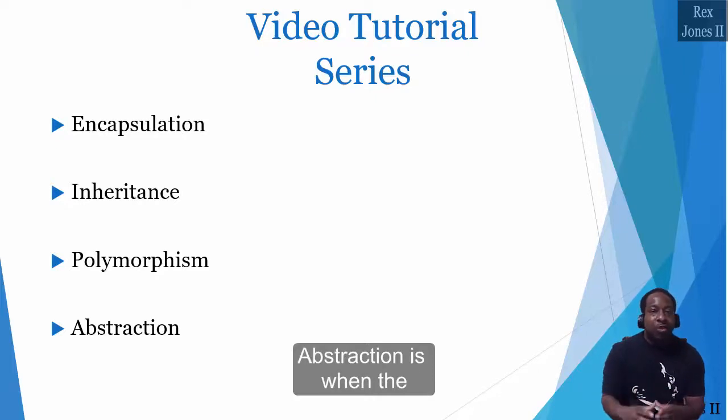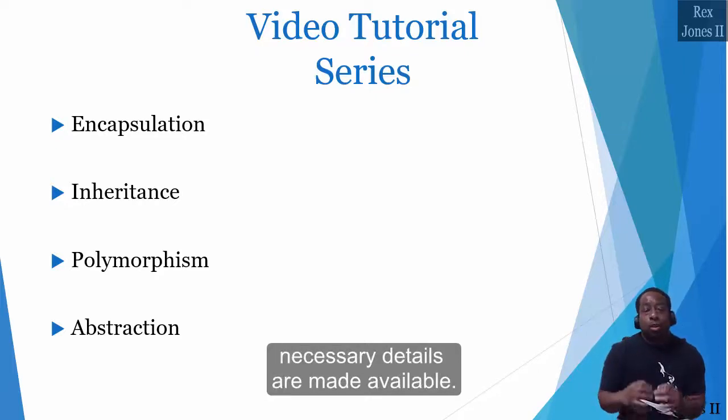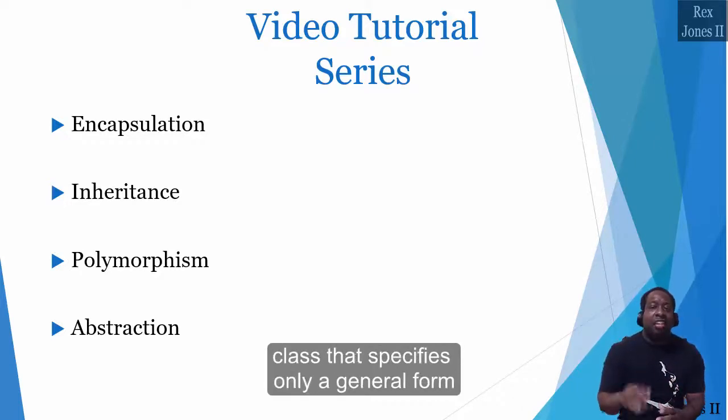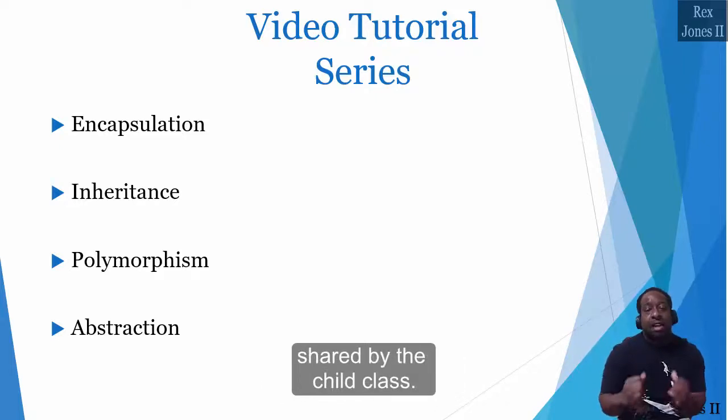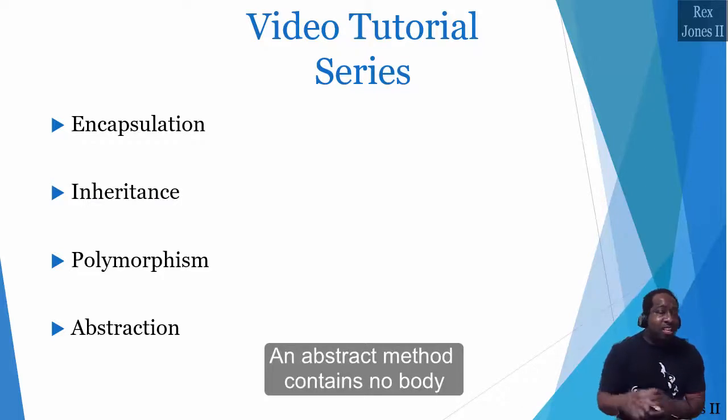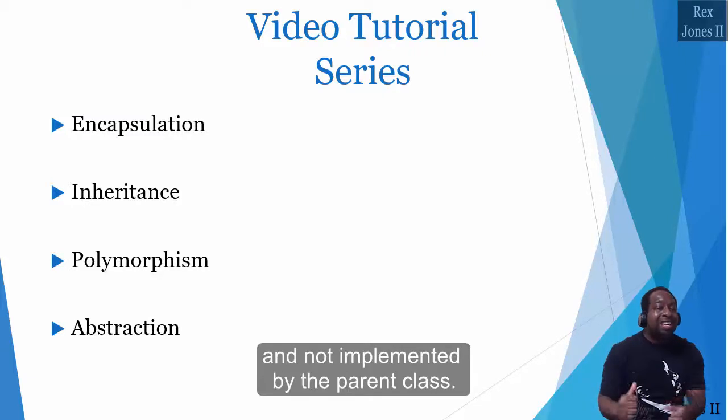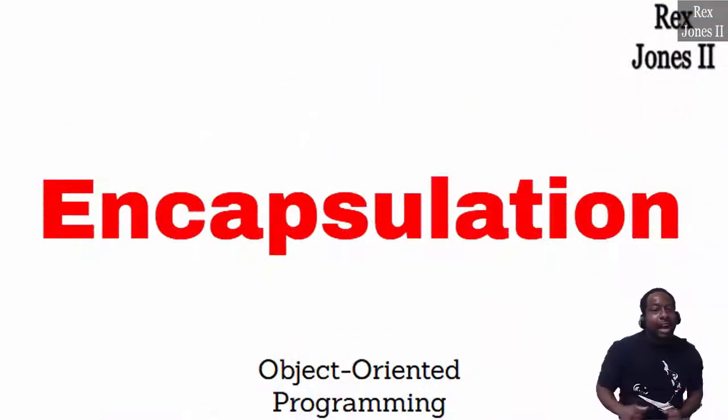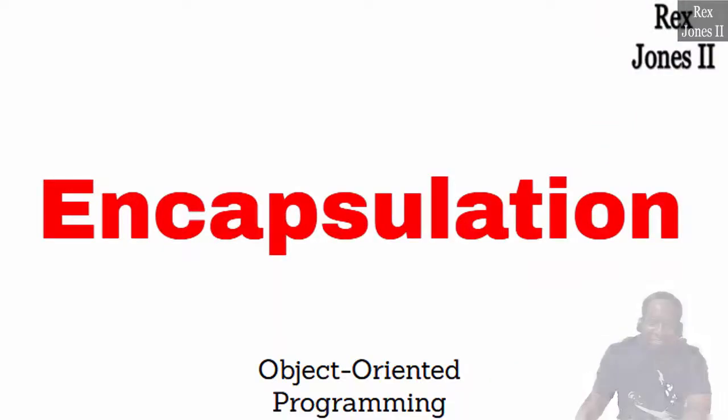Abstraction is when the necessary details are made available. Abstract classes create a parent class that specifies only a general form shared by the child class. An abstract method contains no body and is not implemented by the parent class. That's it for the intro to OOP. Next, I will demo encapsulation.